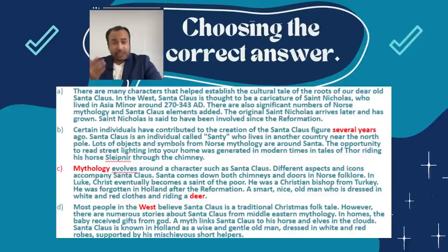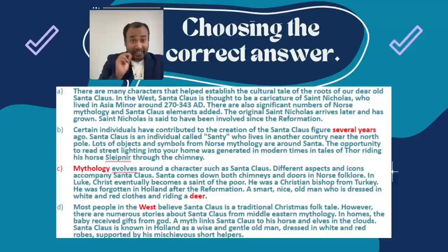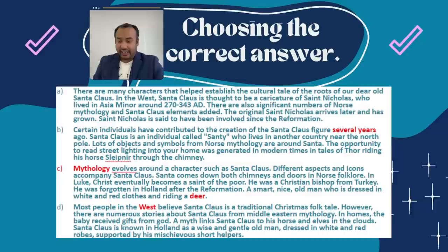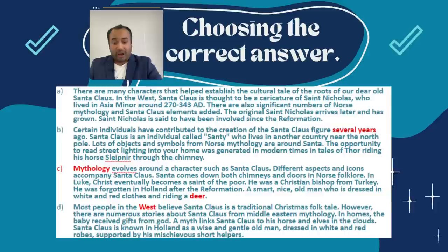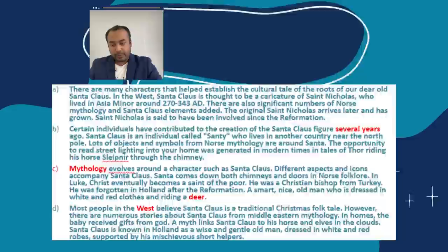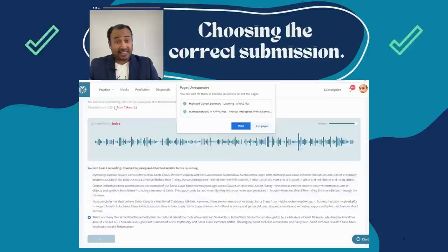Option C — 'Mythology evolves around a character such as Santa Claus' — yes and no, not directly related to my topic, so I won't take that. Option D — 'Most people in the west believe Santa Claus is a traditional Christmas folk tale' — nothing about 'the west' was mentioned. Going back to check the conclusion in Option A: 'Saint Nicholas is said to have been involved since the Reformation' — that matches! I select Option A, press submit, and I get 90. Just read the first line and the last line — that's it.